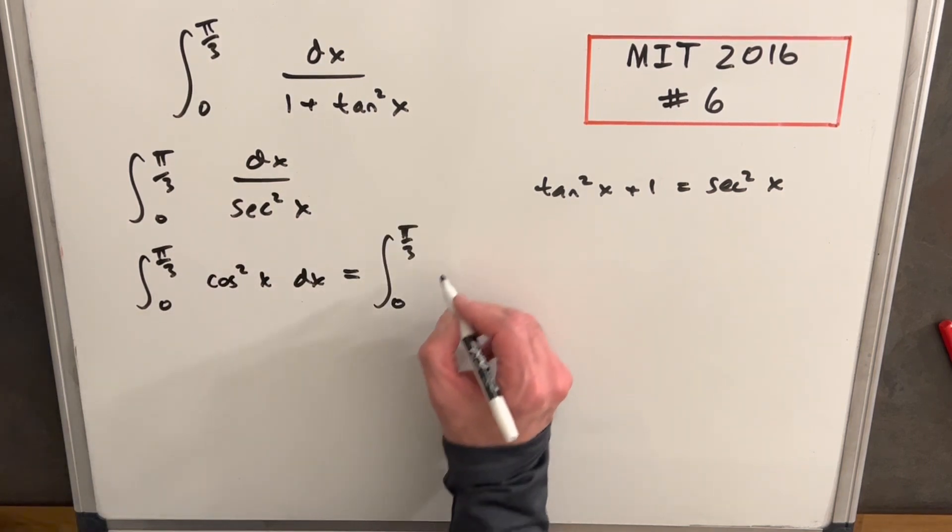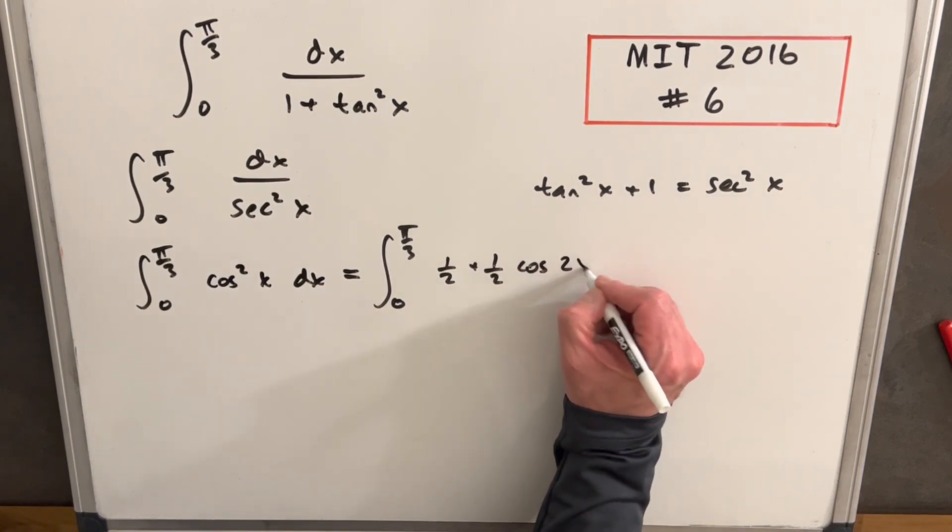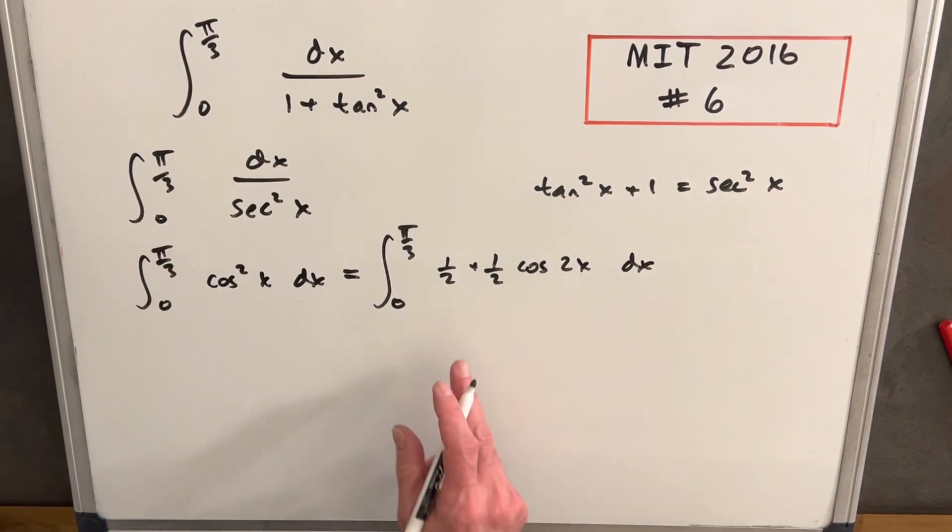From here, we can reduce the power on the cosine and write this as half plus half cosine 2x dx. And then we can just integrate.